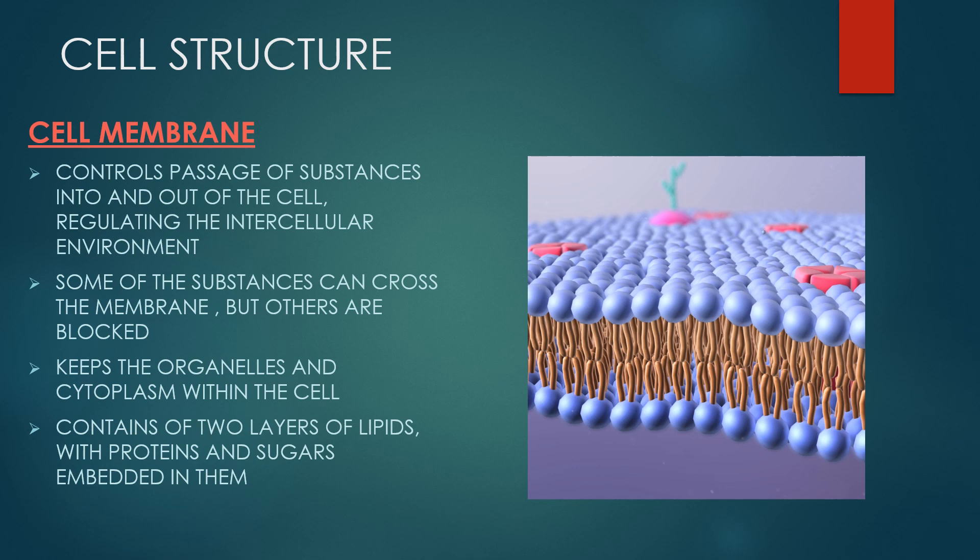Controls passage of substances into and out of the cell, regulating the intracellular environment. Some of the substances can cross the membrane but others are blocked. Keeps the organelles and cytoplasm within the cell and contains two layers of lipids with proteins and sugars embedded in them.